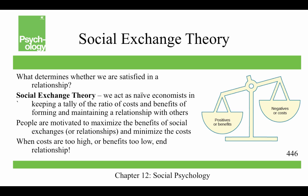Social exchange theory asks: what determines whether we're satisfied with a relationship? In social exchange theory, we act as naive economists, keeping a tally of the ratio of costs and benefits of forming and maintaining a relationship with others. People are motivated to maximize the benefits of social exchanges and minimize the costs, so when the costs are too high or the benefits are too low, you end the relationship.